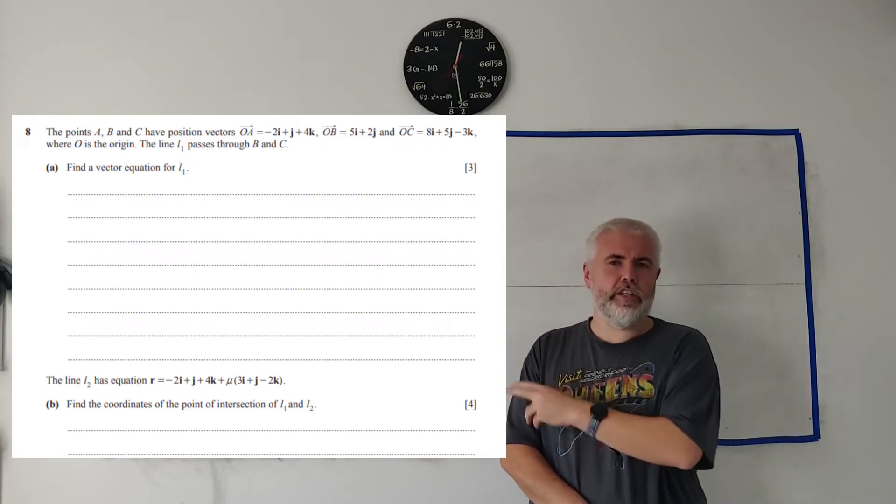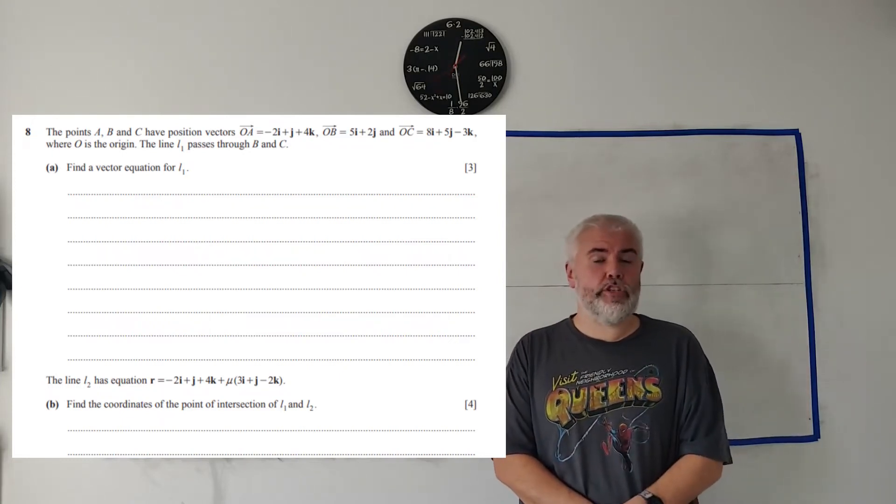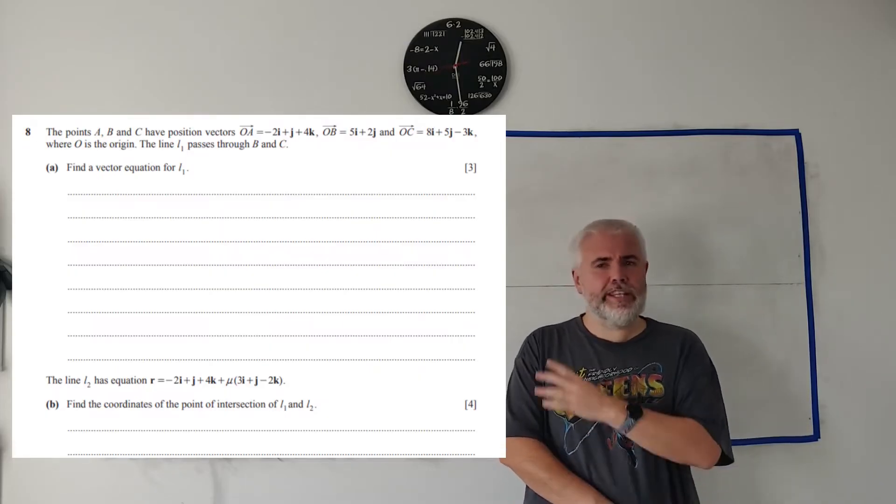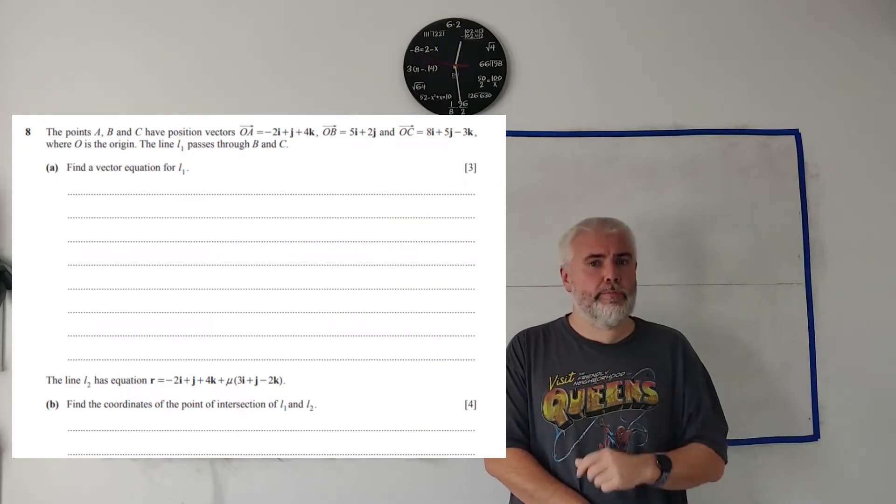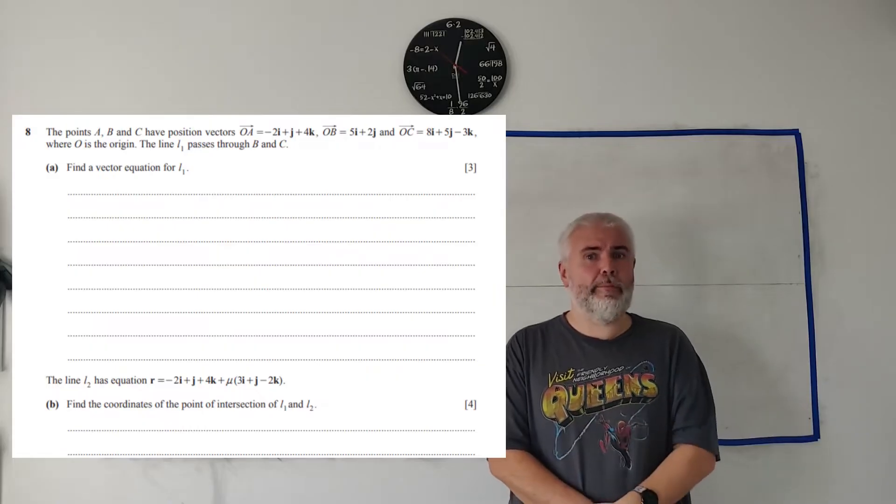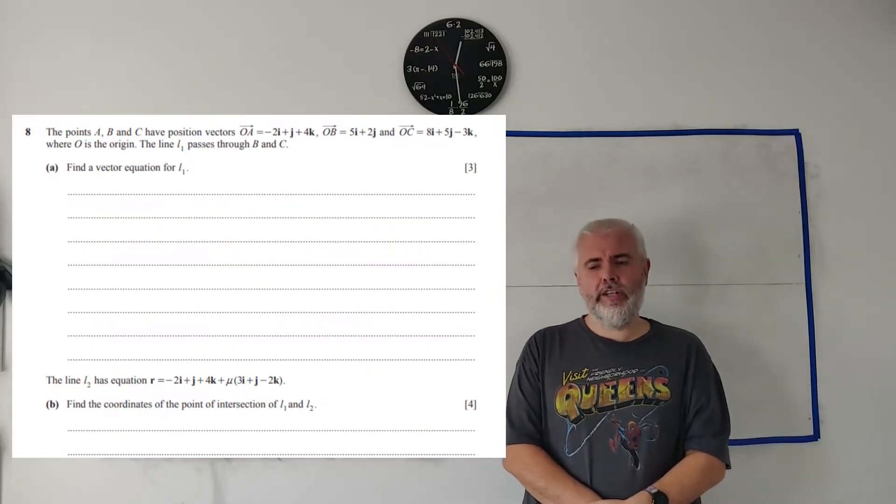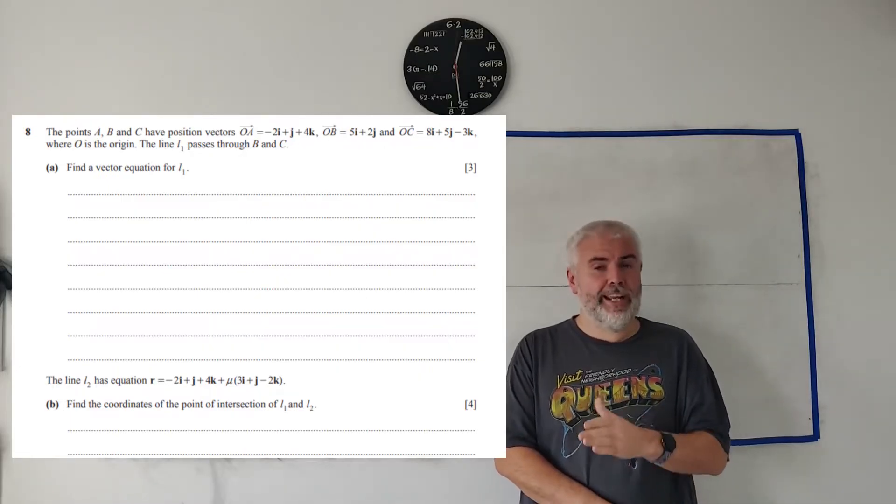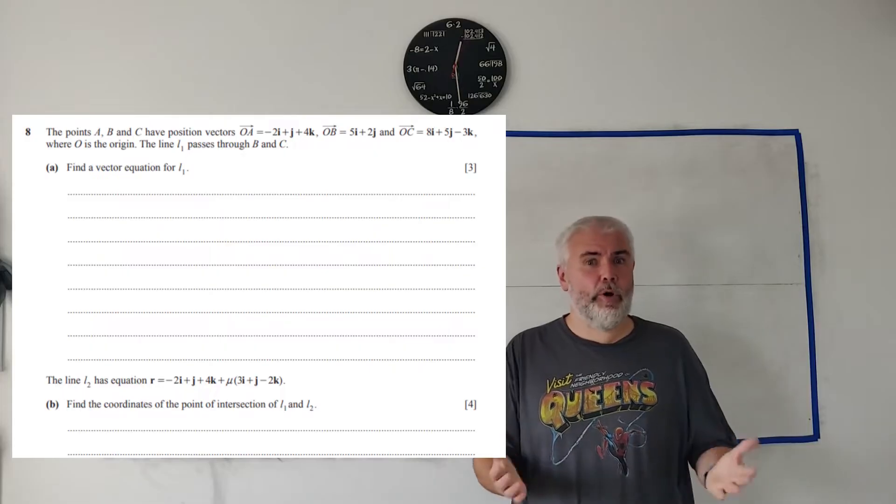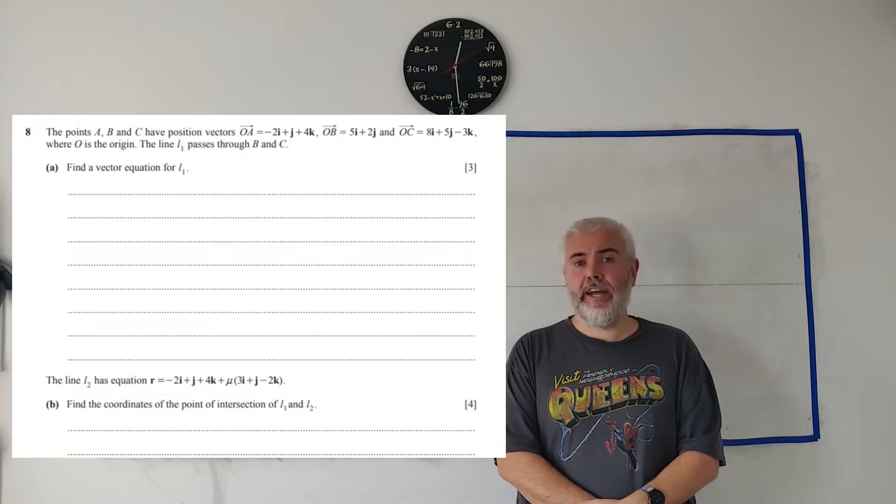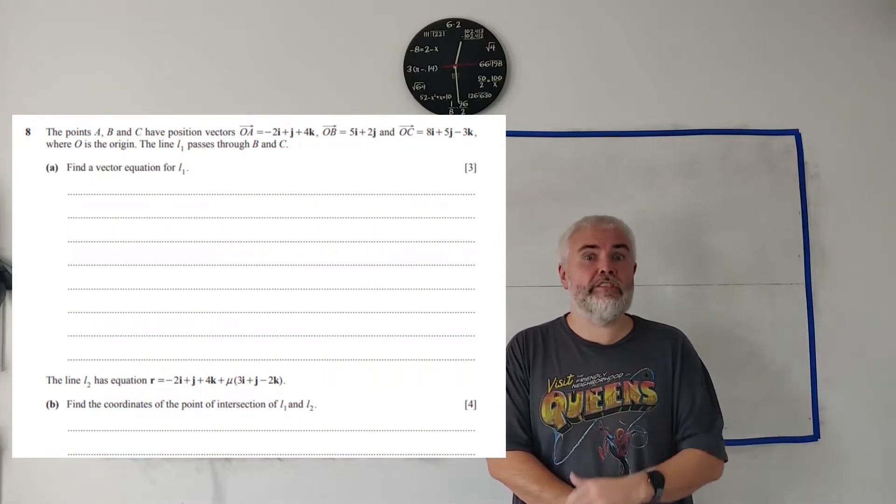In this video, I'll be working through the question you see on the screen from paper 3.2 from 2024 of the Cambridge A-Level exam. If you're looking for a different question from this paper, check out the description below for a link to a playlist. If you find this video or any of my videos useful, I would greatly appreciate liking, subscribing or even sharing.